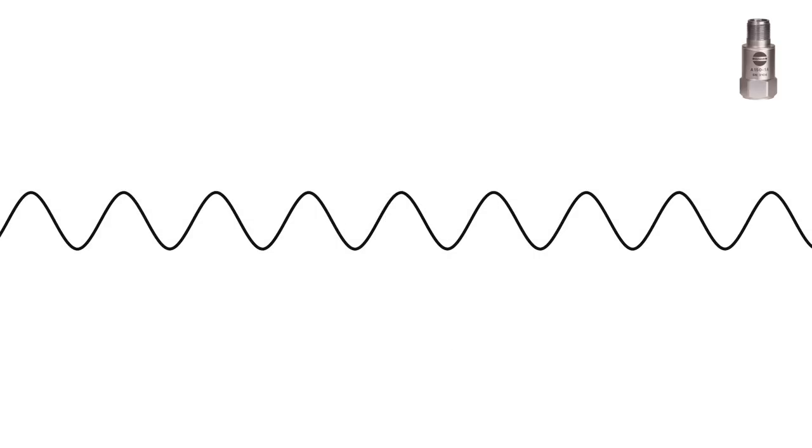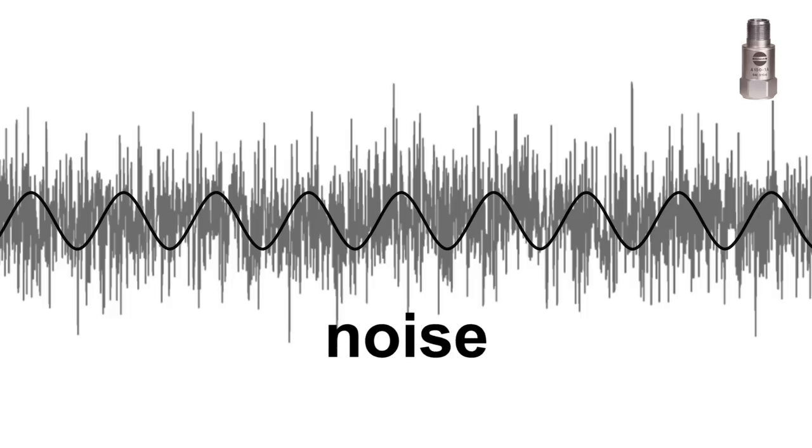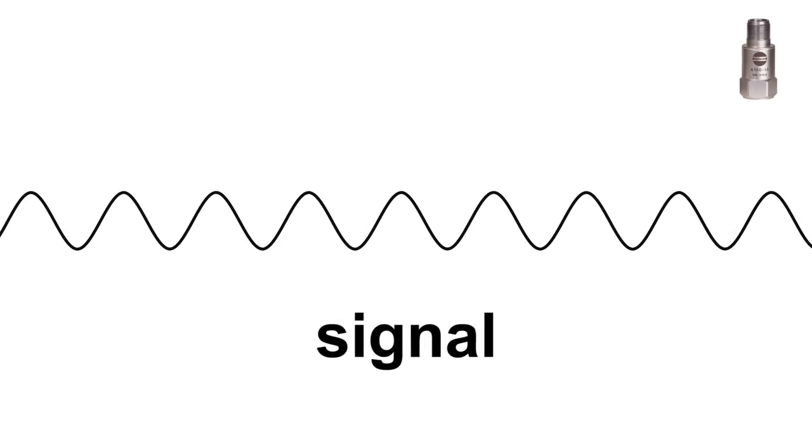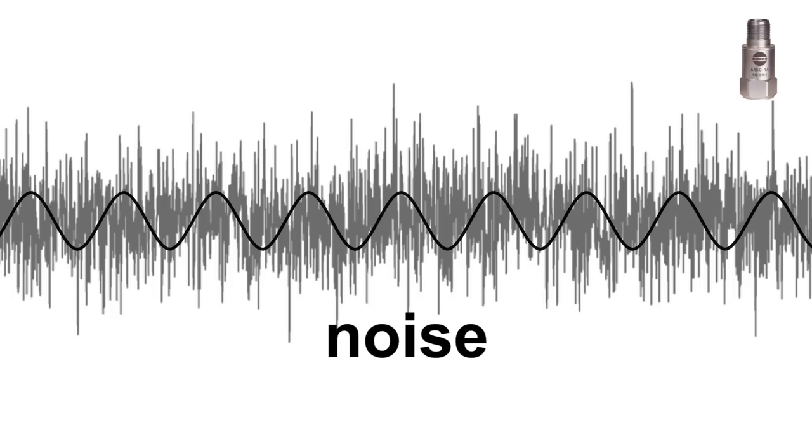Because the usual sensor noise level in the field is from 0.2 to 0.4 mV. In such noise it is very difficult to measure the 0.1 mV because it is lower level than the noise level.